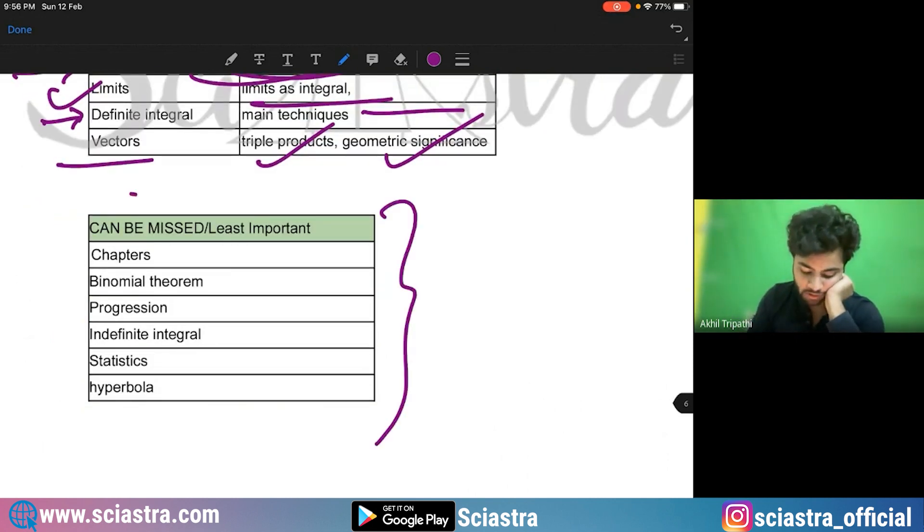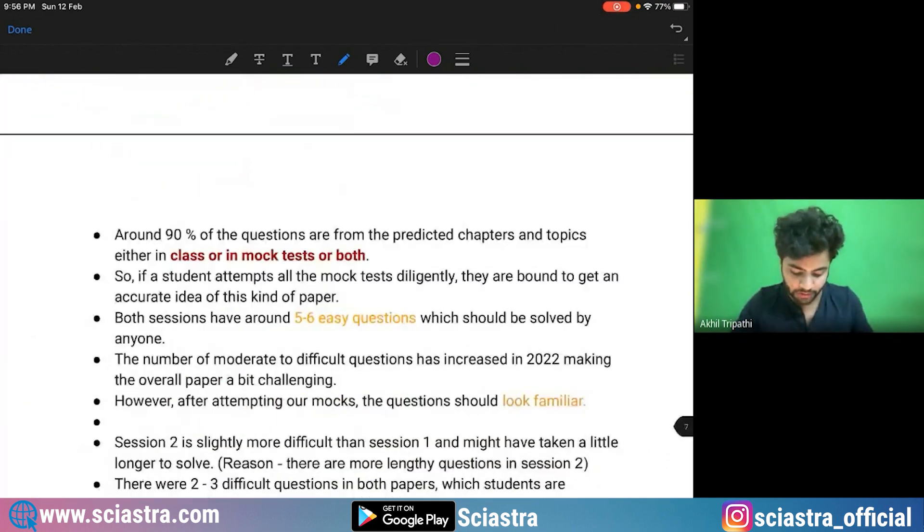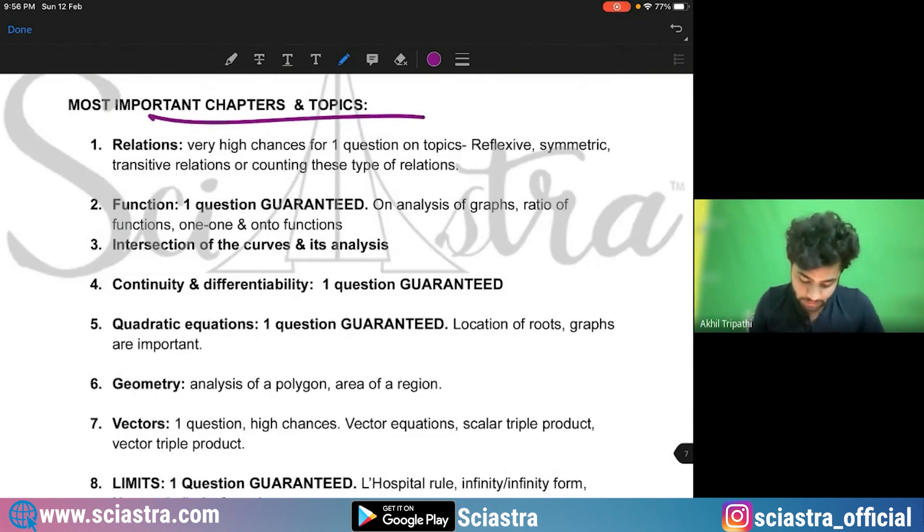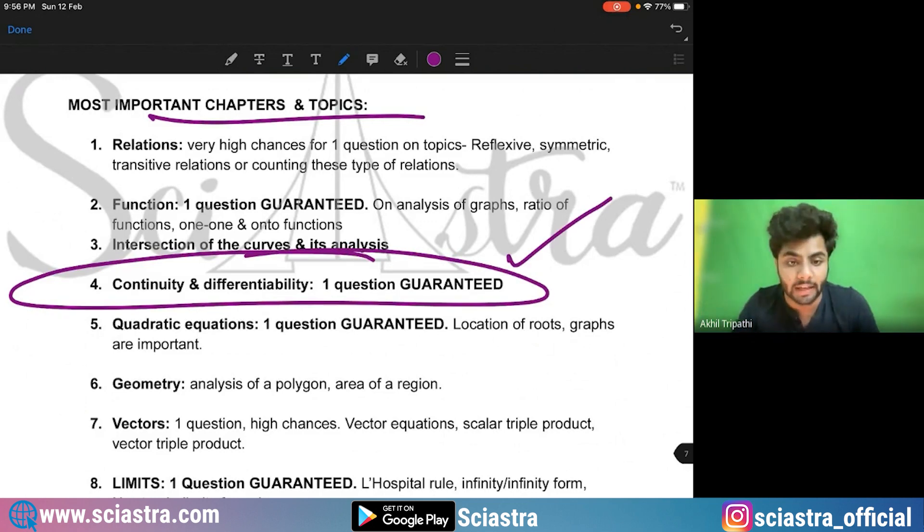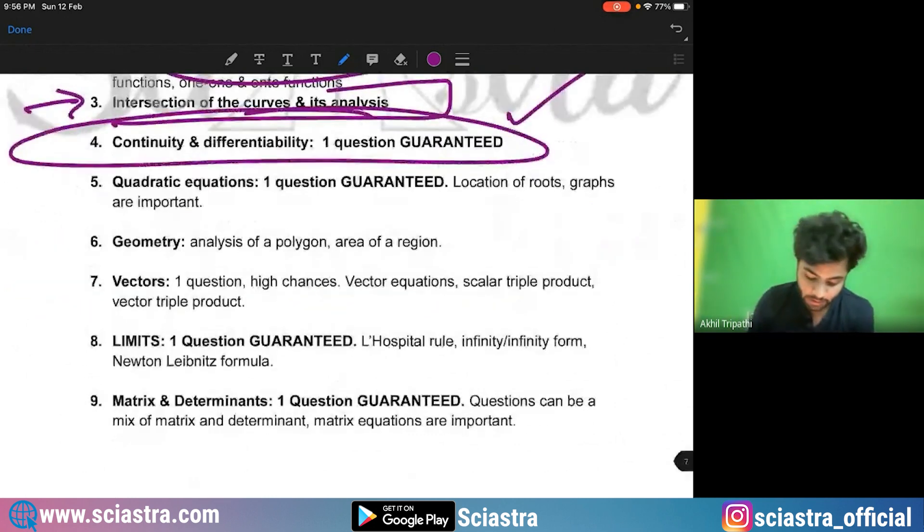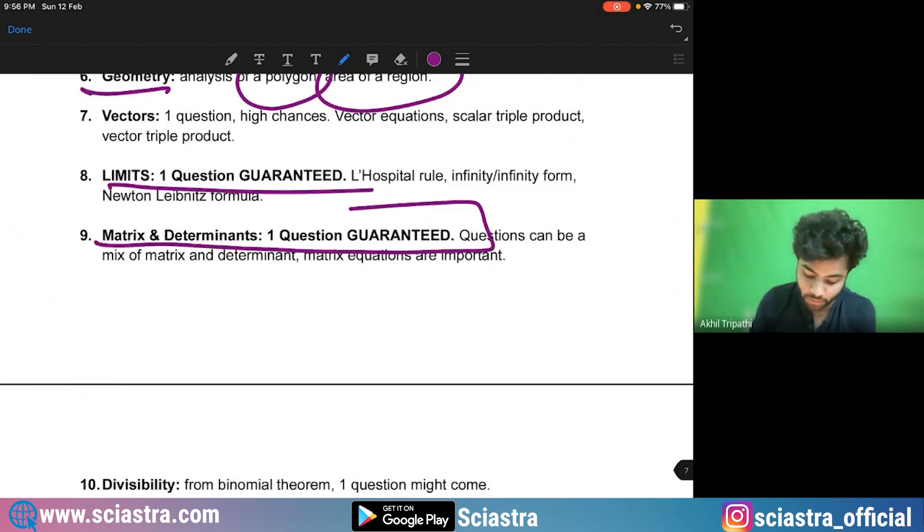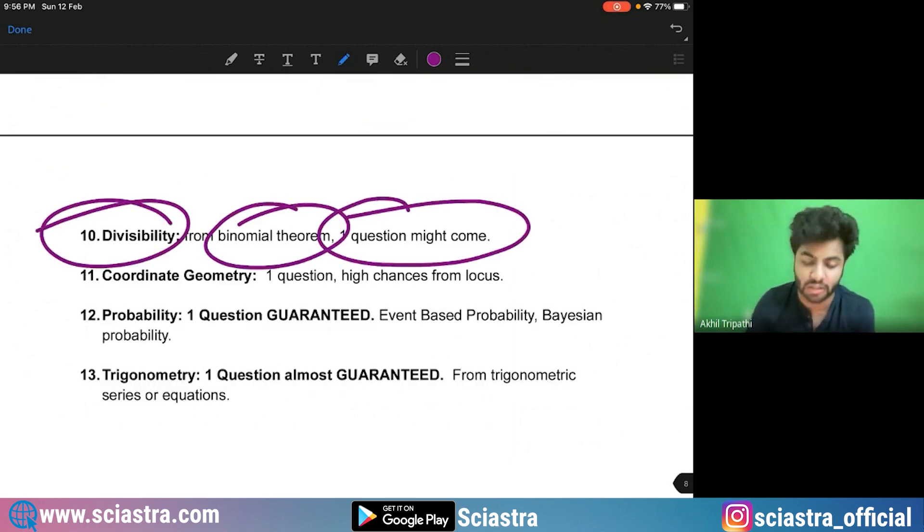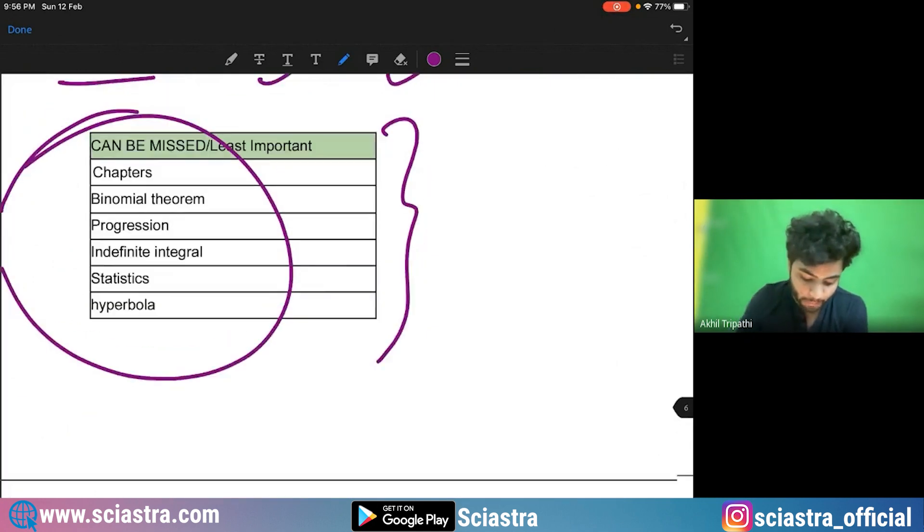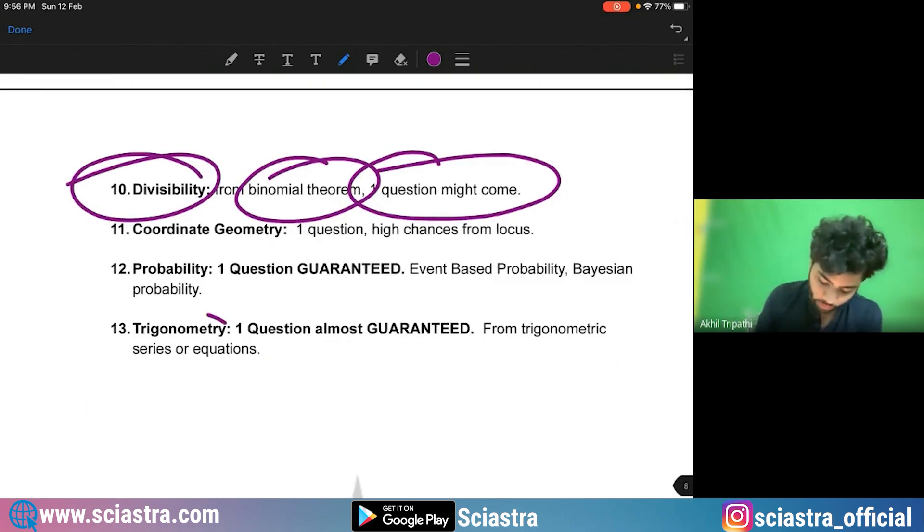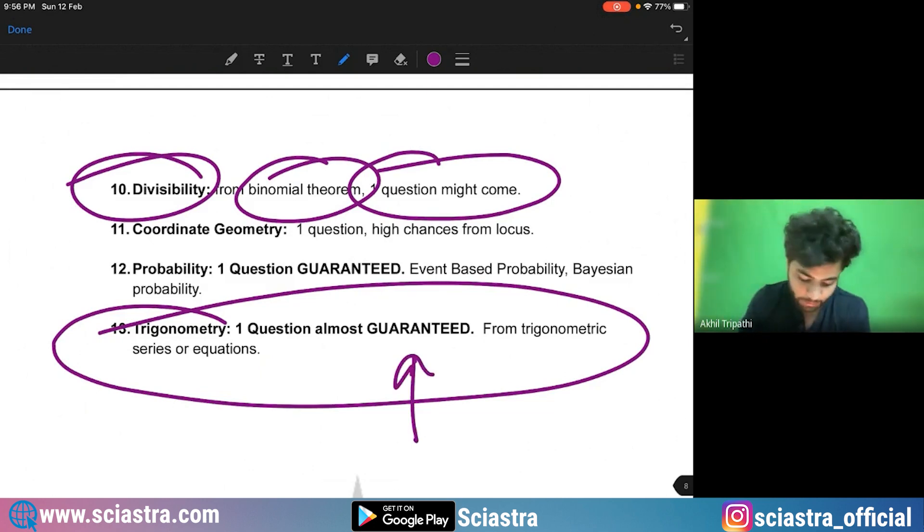The least important chapters or less probable chapters are again same. Again, we have told in detail about 90% of the questions were already predicted and all the most important topics and chapters. If you see from continuity and differentiability, one question is guaranteed from functions. One question is guaranteed from intersection of the curve and analysis. One question is guaranteed geometry, you know, analysis of polygon area under curve or of a region is important. The limits one question guaranteed matrices and determinants. One question guaranteed from divisibility. Binomial theorem, one question might come. As I told you, these are less probable. Binomial theorem is less probable, but one question might come in next exam. Coming to trigonometry, so one question almost guaranteed here. Probability again, one question guaranteed.